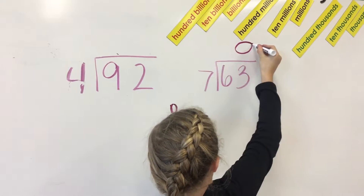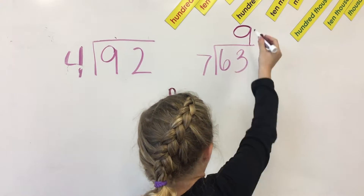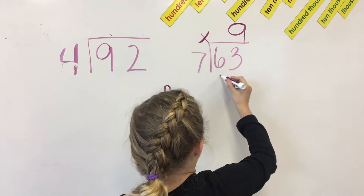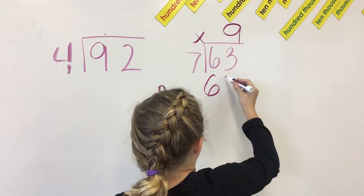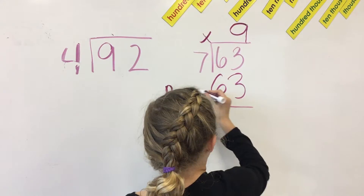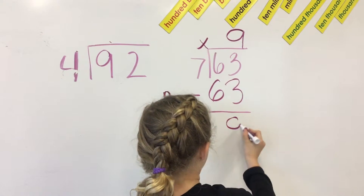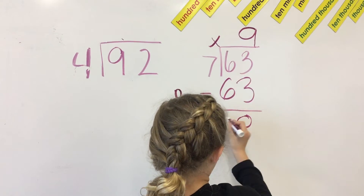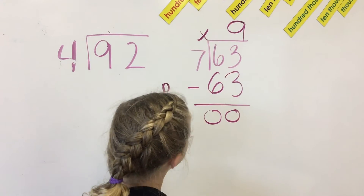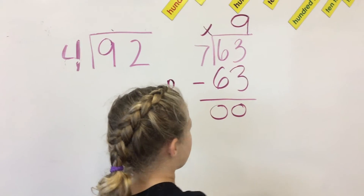So you would put the 9 over the 3, and then you would do 9 times 7, which equals 63. And then you would do 63 minus 63 — 3 minus 3 is 0, and 6 minus 6 is 0. So the answer to 63 divided by 7 is 9.